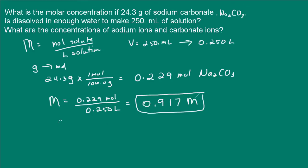Now, in the second part, we are asked what are the concentrations of sodium ions and carbonate ions? So what we have is sodium carbonate. And remember, 1 mole of sodium carbonate is going to produce 2 moles of sodium ions and 1 mole of carbonate ions.